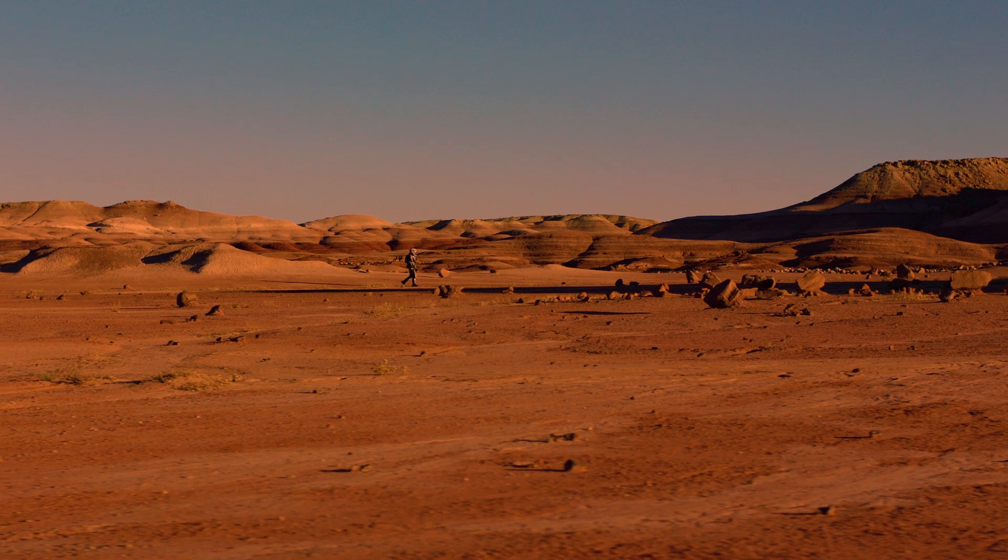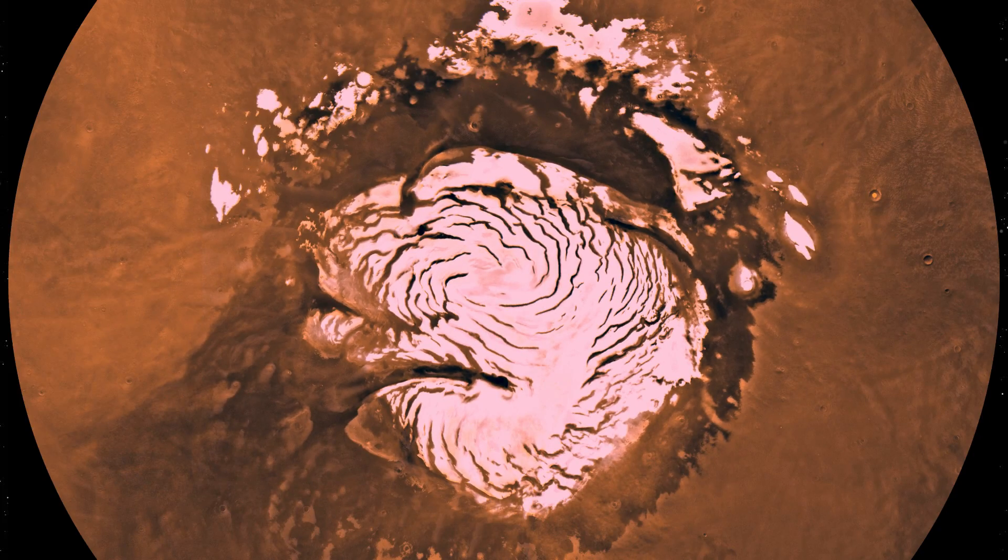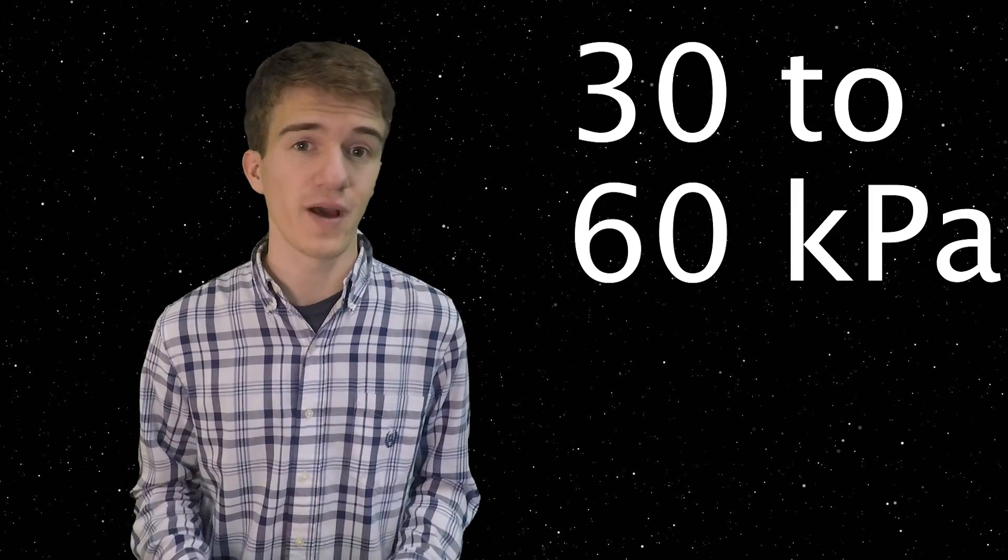So then, how do you raise the pressure of an atmosphere to that point? It's actually been theorized. A couple people at NASA were able to do a study. And if you took all of the Martian ice caps and melted that, well, they're not made of water, but they're actually made of carbon dioxide. And that would raise the pressure of the atmosphere anywhere to 30 to 60 kilopascals, which is enough to get past that point where you just need a mask.